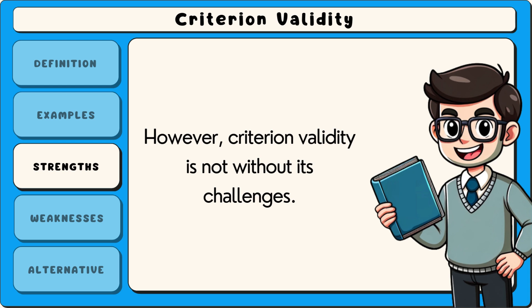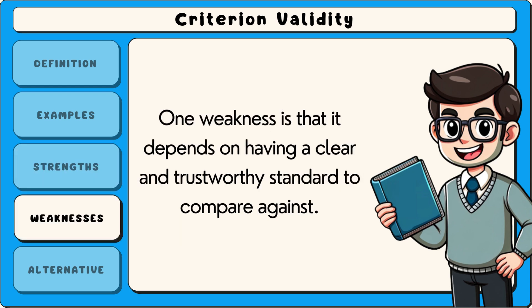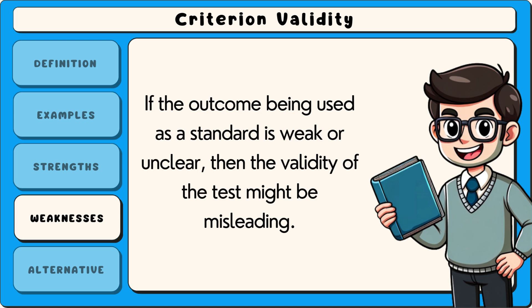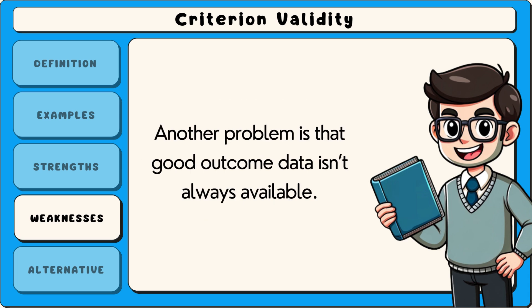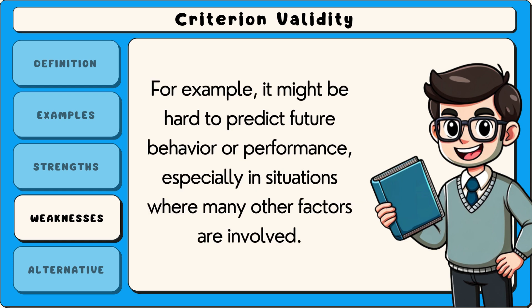However, criterion validity is not without its challenges. One weakness is that it depends on having a clear and trustworthy standard to compare against. If the outcome being used as a standard is weak or unclear, then the validity of the test might be misleading. Another problem is that good outcome data isn't always available — for example, it might be hard to predict future behaviour or performance, especially in situations where many other factors are involved.